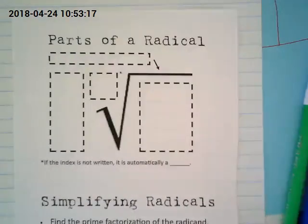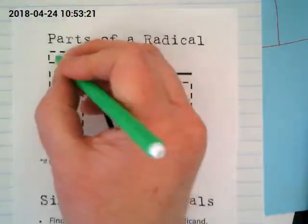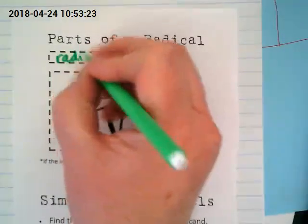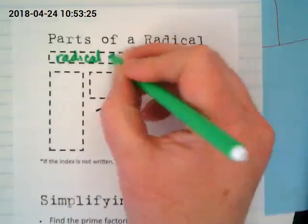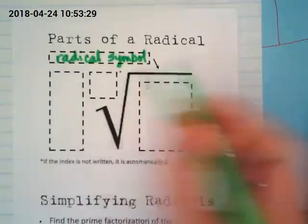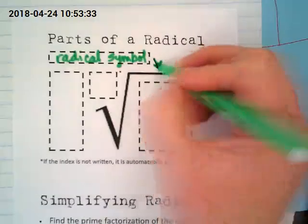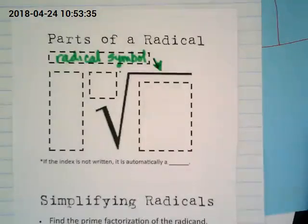The parts of a radical. First thing I want you to do is up here, title this radical symbol. It is this thing that you guys have known as a square root. It's really called a radical.